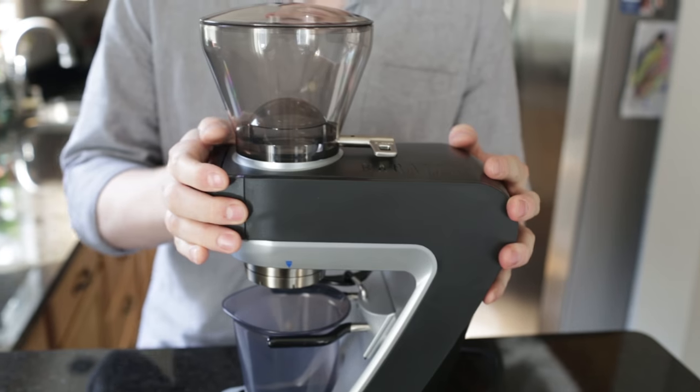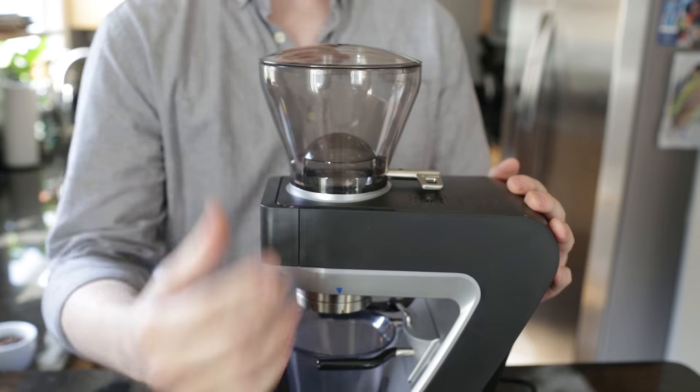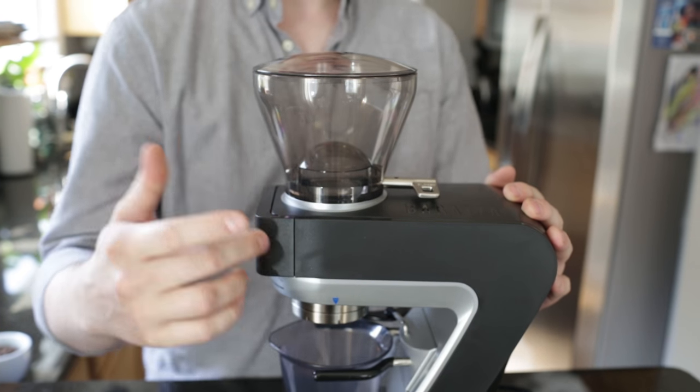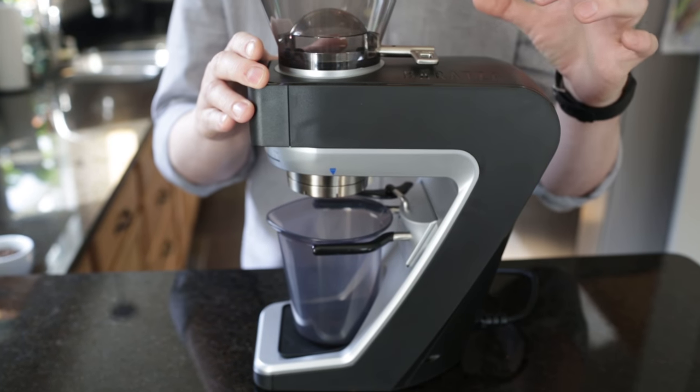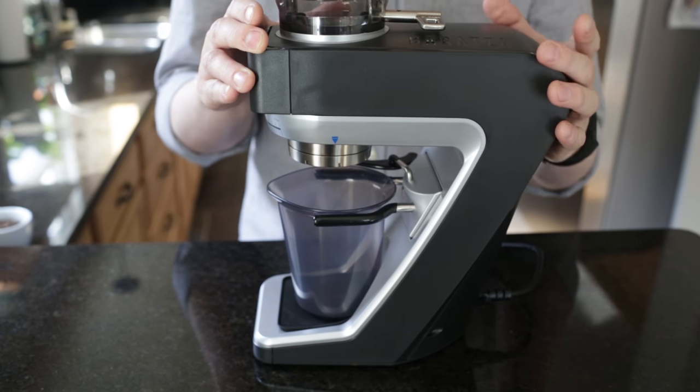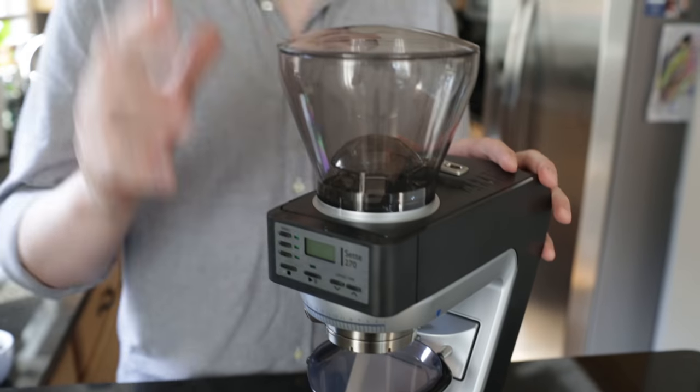The first thing you'll notice is that it's a very different profile from previous grinders where they would normally be a fairly vertical grinder. Now we have this sort of Sette profile. There's some really interesting things going on under the hood that kind of merit that profile that we'll get to in a bit. But first let's work our way from the top down here.